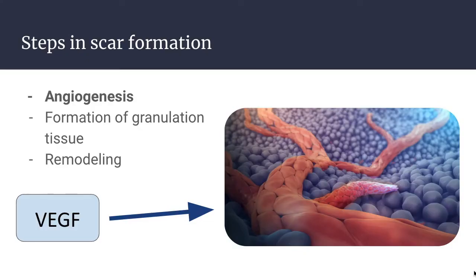There are three primary steps in scar formation. The first is angiogenesis, which is the process of new blood vessels developing from existing vessels. It is critical in healing at sites of injury, as well as in the development of collateral circulations at sites of ischemia, and it also allows tumors to increase in size beyond the constraints of their original blood supply. At sites of injury, the new blood vessels supply oxygen and nutrients needed to support the repair process. These newly formed vessels are pretty leaky due to incomplete inter-endothelial junctions and because VEGF — vascular endothelial growth factor, the growth factor that drives angiogenesis — also increases vascular permeability. This leakiness accounts in part for the edema that may persist in healing wounds long after the acute inflammatory response has been resolved.